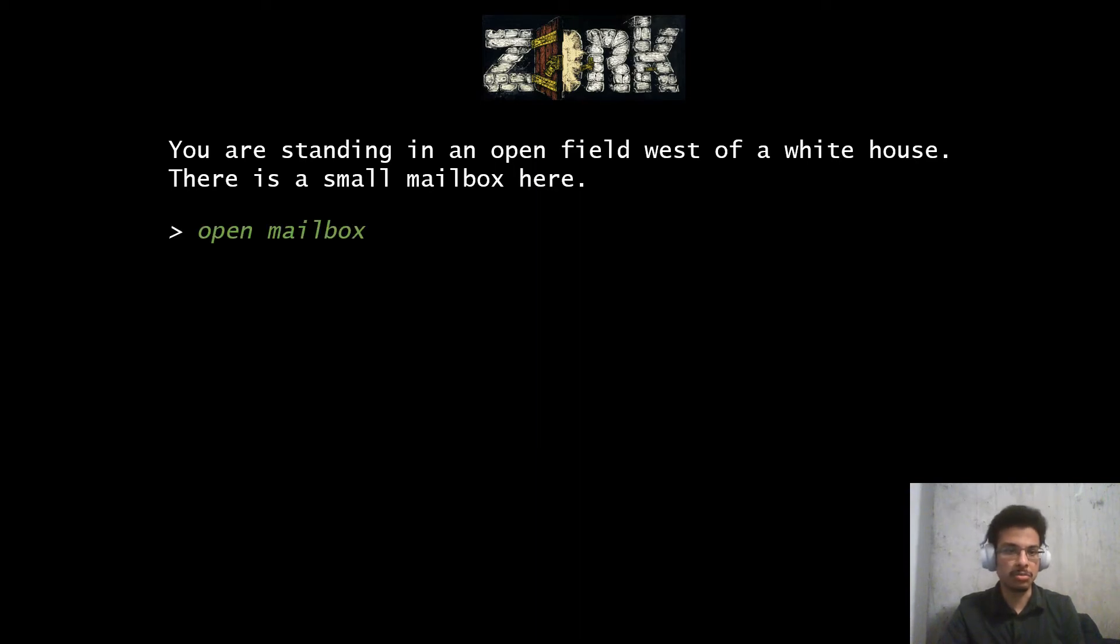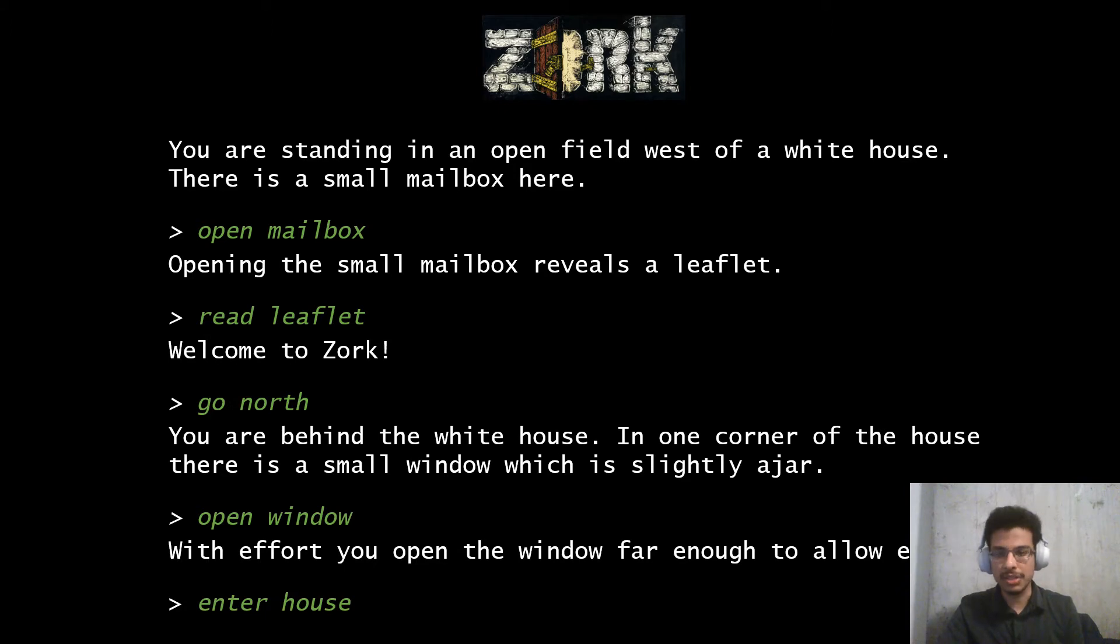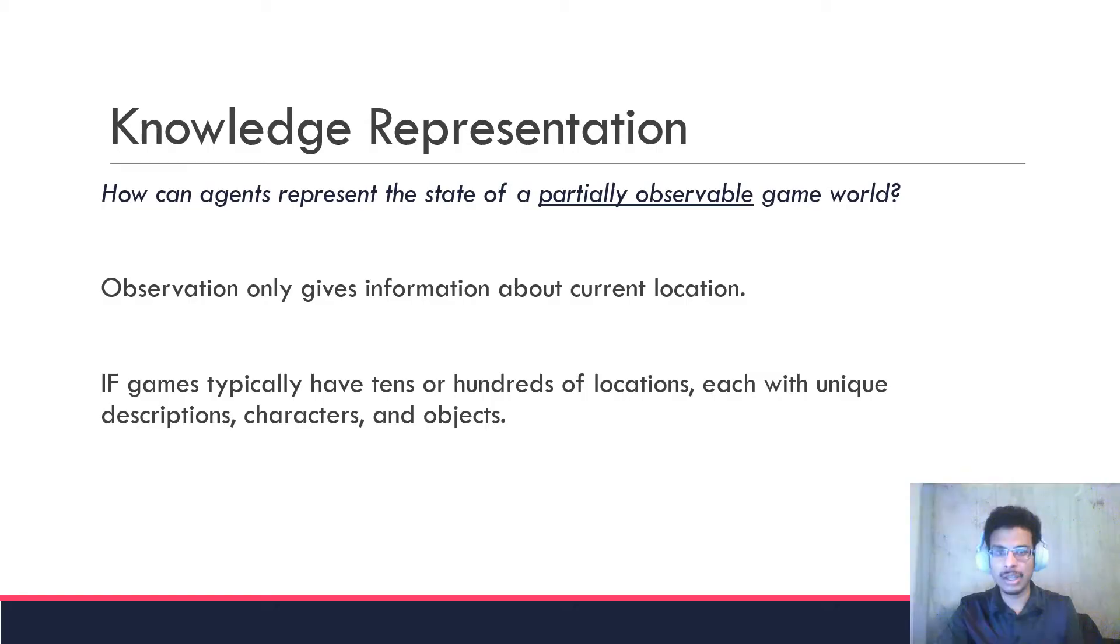The player receives a description of what they see, something like: you're standing in an open field west of the White House and you see a mailbox in front of you. Then they type in what they want to do given that description. So you might want to open the mailbox. With this action you receive immediate feedback on what happens when you open the mailbox, and so on.